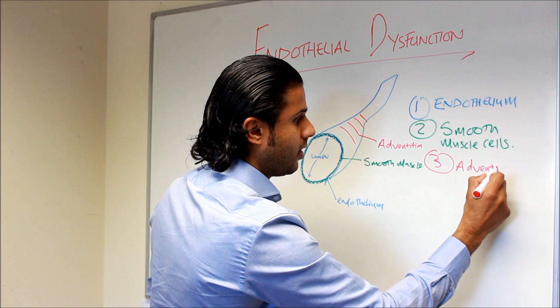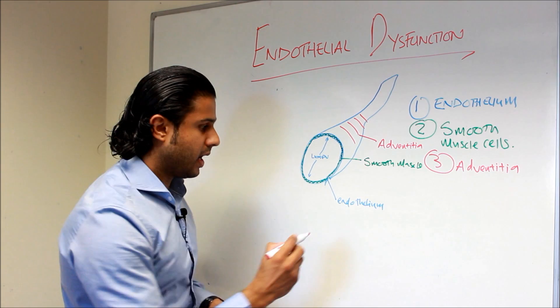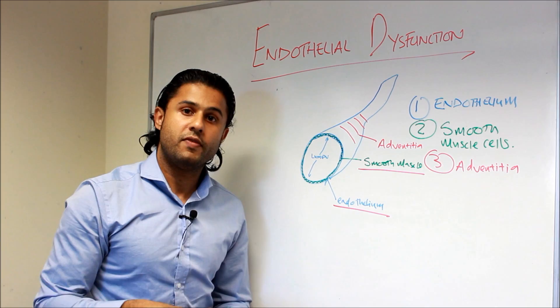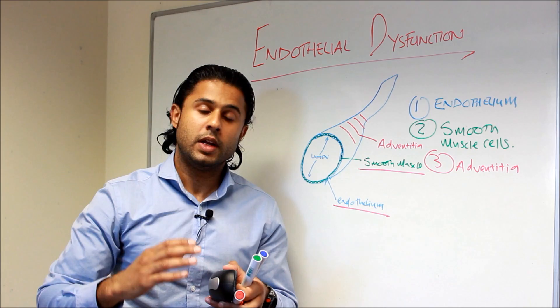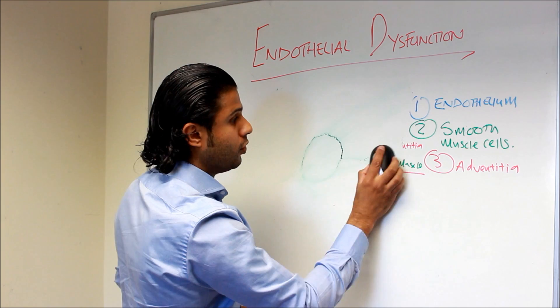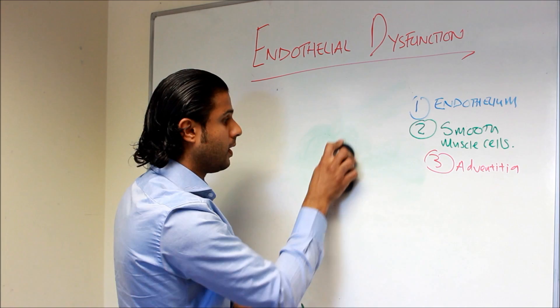The adventitia encapsulates the entire blood vessel and forms a protective layer. But the most important part in terms of blood vessel health is the endothelium, because it directs the actions of the smooth muscle. The endothelium releases various vasoactive factors which can cause either dilation or constriction. It's the balance of the dilatory and constrictive factors which enables our blood vessel to maintain vascular homeostasis. Now we need to look at the blood vessel in a longitudinal manner. Remember, endothelial dysfunction is the first step of atherosclerosis.